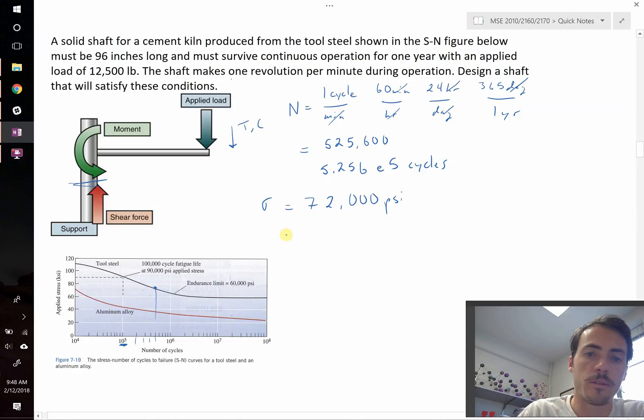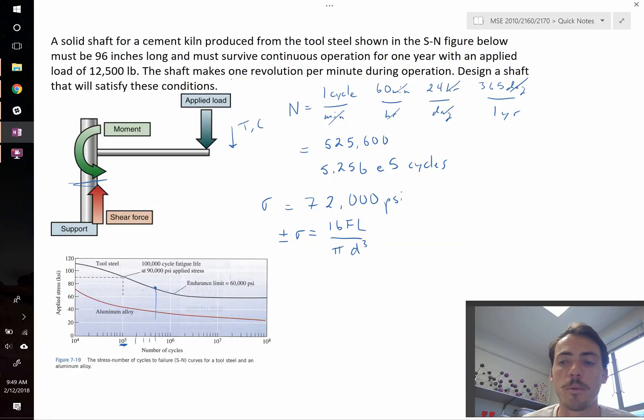So we're going to write out that the plus or minus stress for this rotating shaft is equal to 16FL. F is the force that's on it. L is the length of the rod. This is divided by pi times the diameter cubed, d cubed, right? Again, this comes from statics, from analyzing the bending moment. We're just going to use this equation as if we already know it in this class.